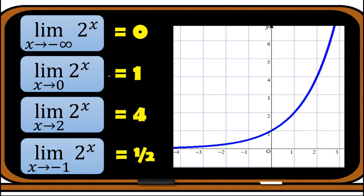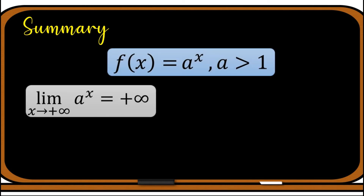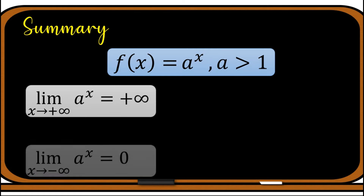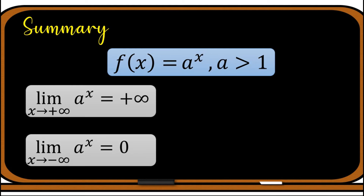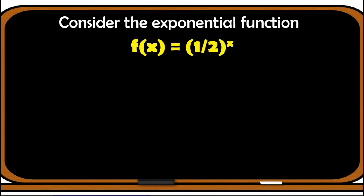As you can see, the last three items can be evaluated using direct substitution. To summarize the limits of an exponential function when the base is greater than one: the limit of a^x as x approaches positive infinity equals positive infinity; the limit of a^x as x approaches negative infinity equals zero; and the limit of a^x as x approaches a constant c equals a^c, where c is in the domain of the function.